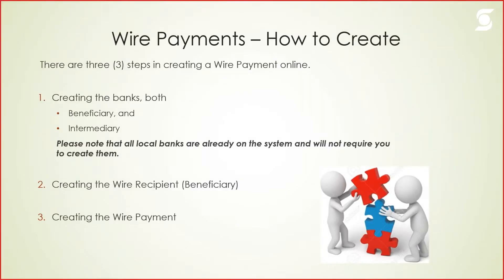For example, if you create Bank of America on the system with its US SWIFT code, it doesn't matter the address — as long as it's the same Bank of America with the same SWIFT you won't need to recreate it. Second, you create the wire recipient or beneficiary on the system. Third, you create the wire payment. Once the bank and beneficiary are created, going forward all you need to do is create the payment — it takes less than a minute.